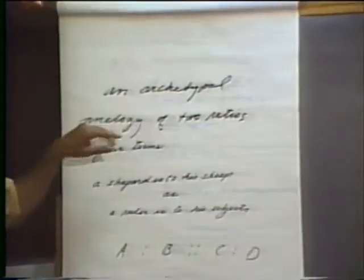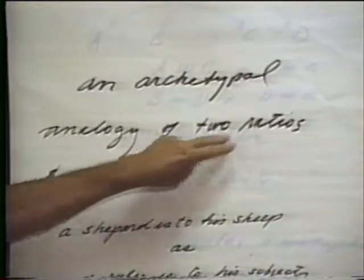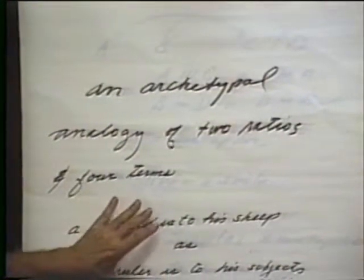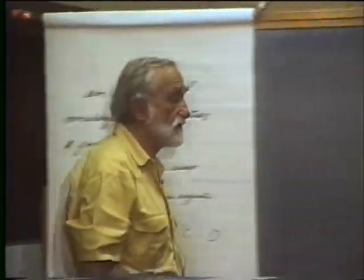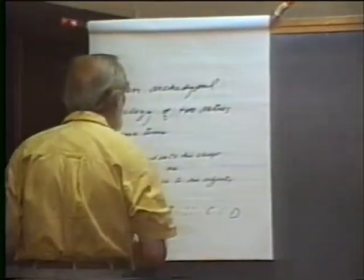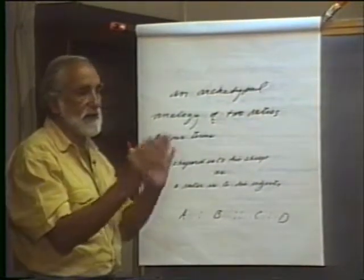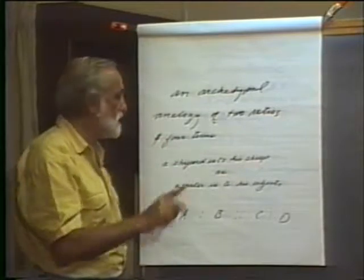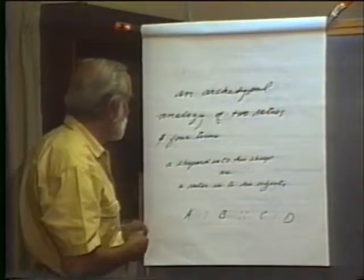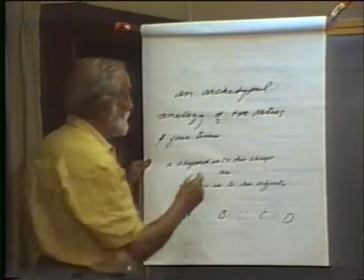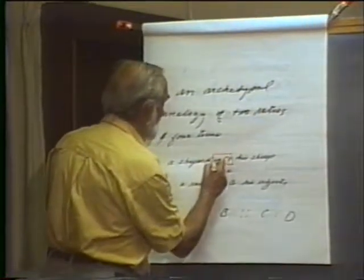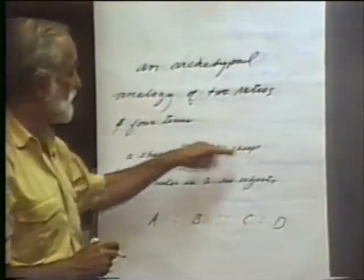The kind of analogy we're talking about is an archetypal analogy of two ratios of four terms. I'm going to explore an analogy and represent it symbolically. What is a ratio? A ratio is a particularly interesting relationship within a class — within a class, not just any two random things. Therefore: a shepherd is to his sheep. There must be a relationship between them. That's a ratio of two terms.